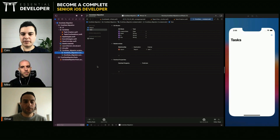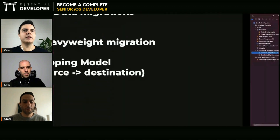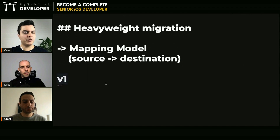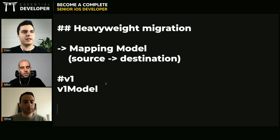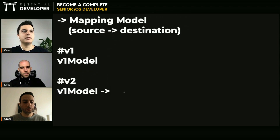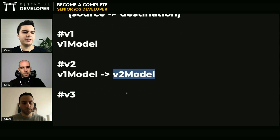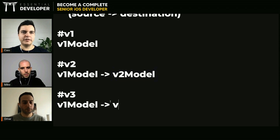There are many strategies on how to perform the migration, but as long as we have the tests to guarantee that the outcome is correct, we can change the strategy to make it more performant. The way to do heavyweight migration is to define a mapping model. Say you have application V1 with model V1, you release it. Then you release V2 with a new model — you need a mapping model from V1 to V2. Then if you release V3 with a V3 model, you need a mapping model from V1 to V3 and from V2 to V3.